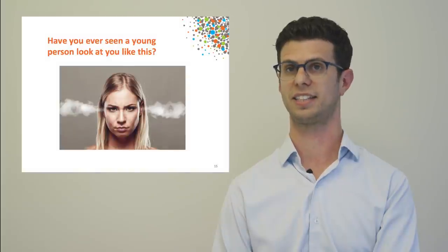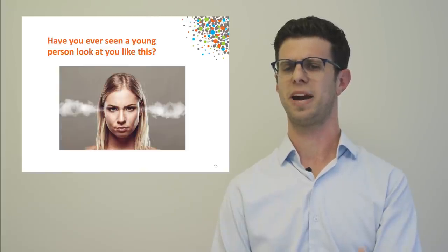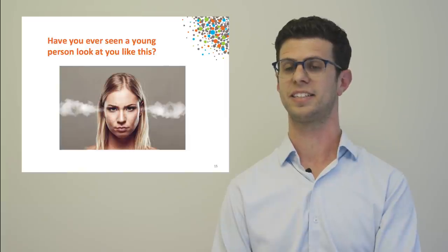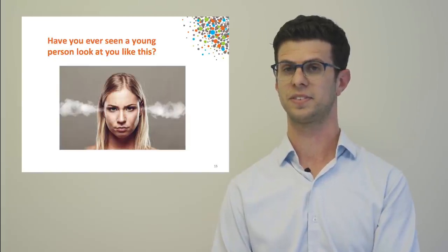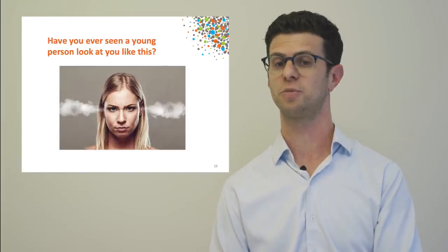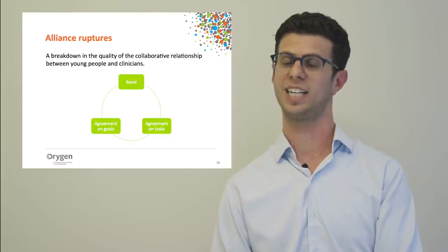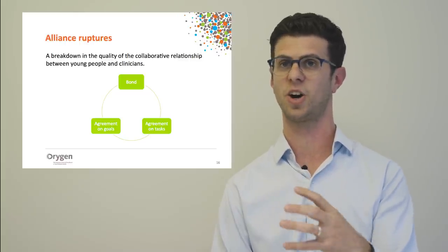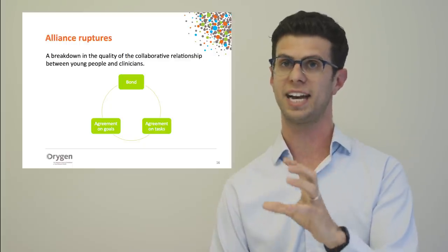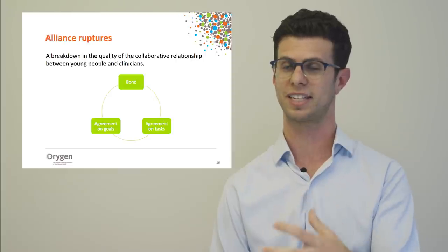Let's turn to alliance rupture and repair. Have you ever seen a young person look at you with that expression? Take a moment to think about what it made you feel, what you thought, and how you responded. An alliance rupture is when there's a breakdown in the collaborative relationship between a young person and a clinician — a breakdown in the bond, tasks, or goals, where the collaborative work doesn't seem to be working anymore.